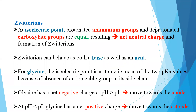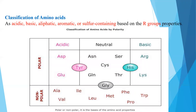At one pH condition glycine has a net negative charge, at another it has a net positive charge and will move towards the cathode, and at the isoelectric point it has a net neutral charge. Based on polarity, amino acids are grouped into two groups — polar and non-polar — whereas depending upon the side chain, they are divided into acidic, basic, aliphatic, aromatic, or sulfur-containing amino acids.